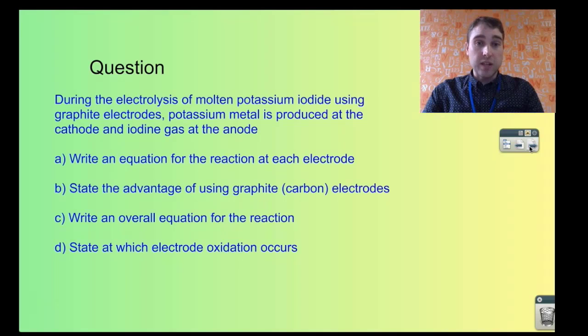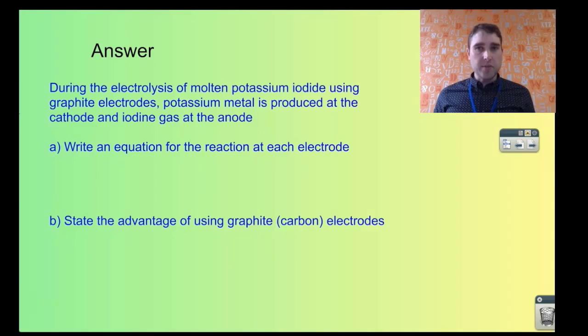Write an equation. State the advantage of using graphite as your electrodes. Write an overall equation and state at which electrode oxidation occurs. So let's break that up a little bit. The first part of the question says, write an equation for what's occurring at each electrode.